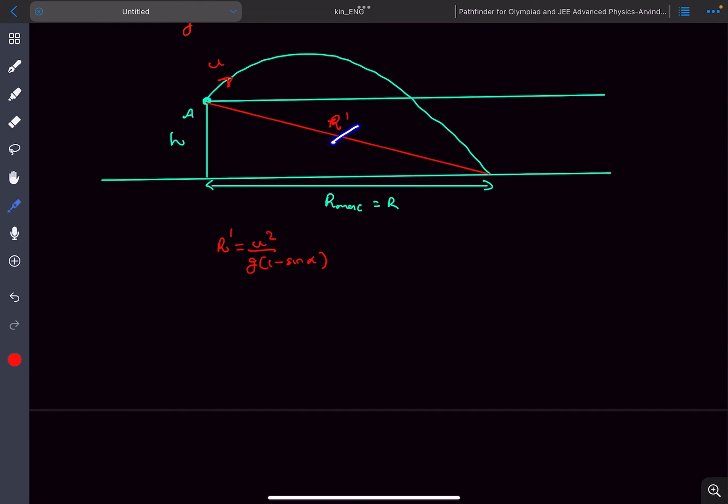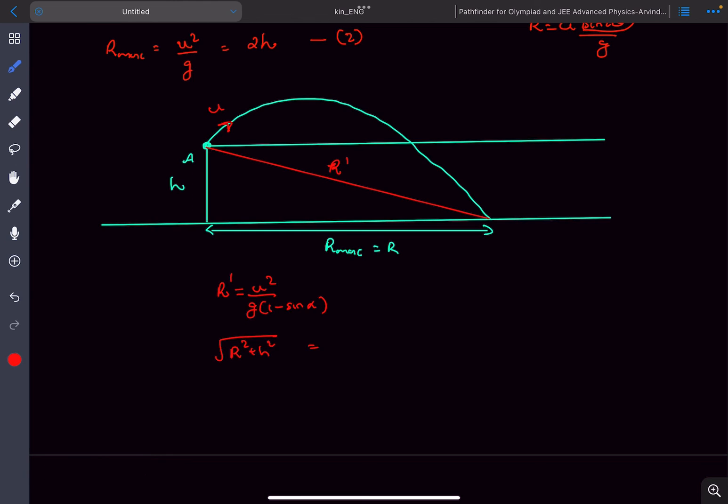Moving on, from this right triangle I can write the value of r' as √(r² + h²). The value of u² we determined to be 2gh in the previous part, divided by g times (1 - sin α).